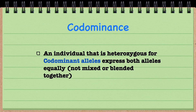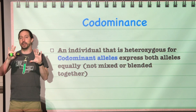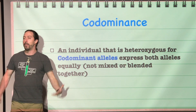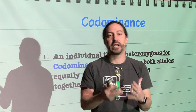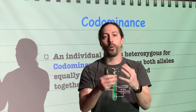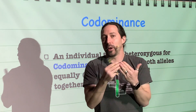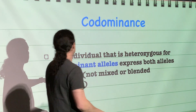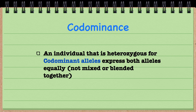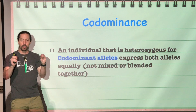But sometimes we have what's called co-dominance, and that's where instead of having one allele mask another allele, both alleles are going to be expressed. But the expression of them is going to be equal but not overlapping — they're not going to mix or blend together. You're going to have both traits equally.